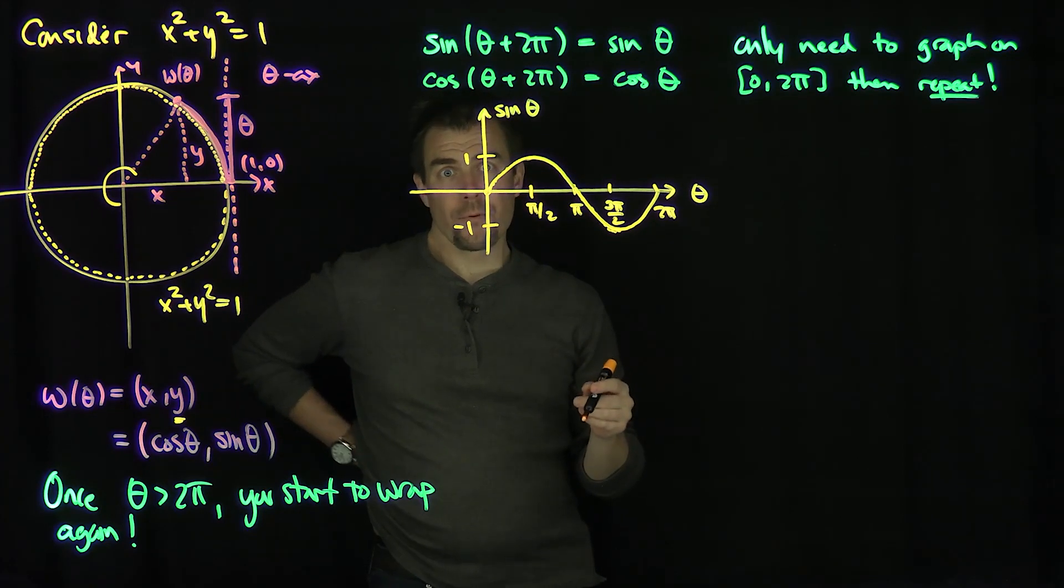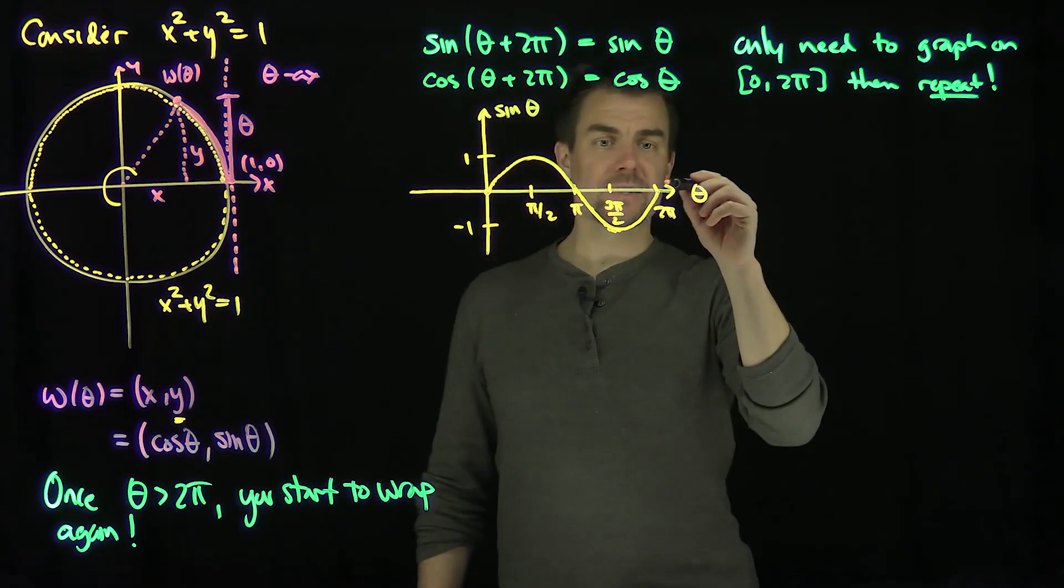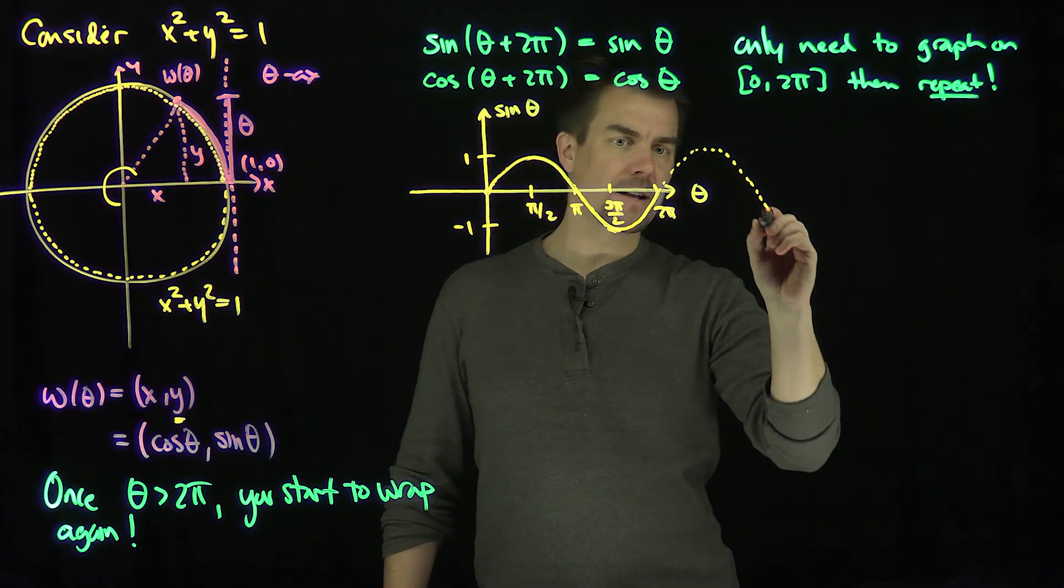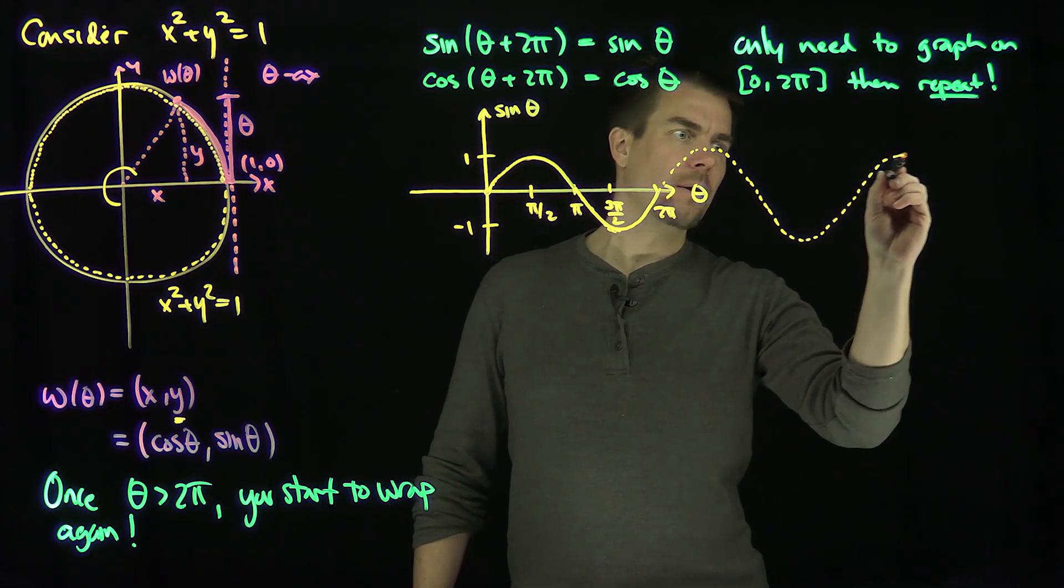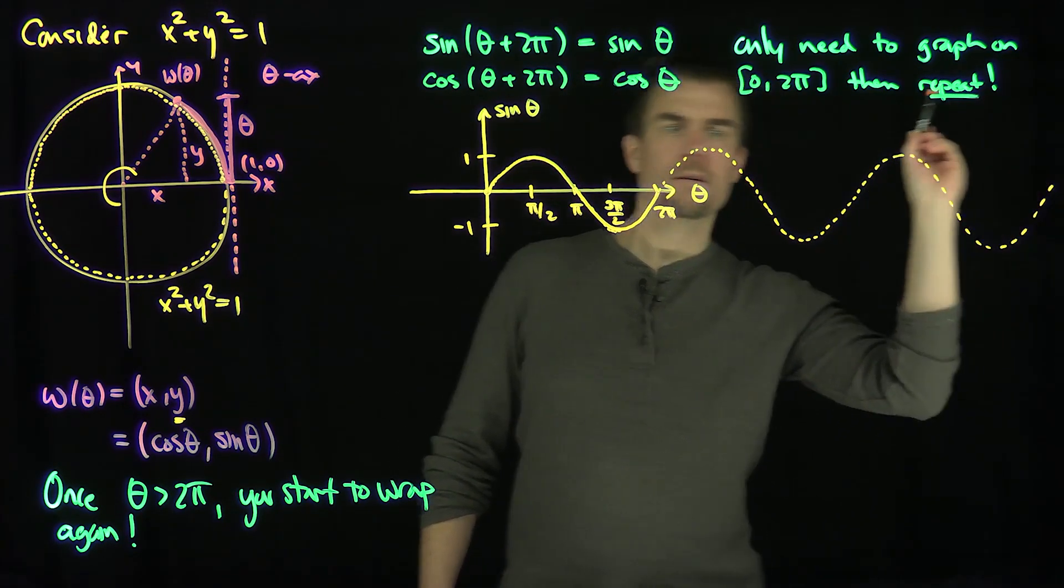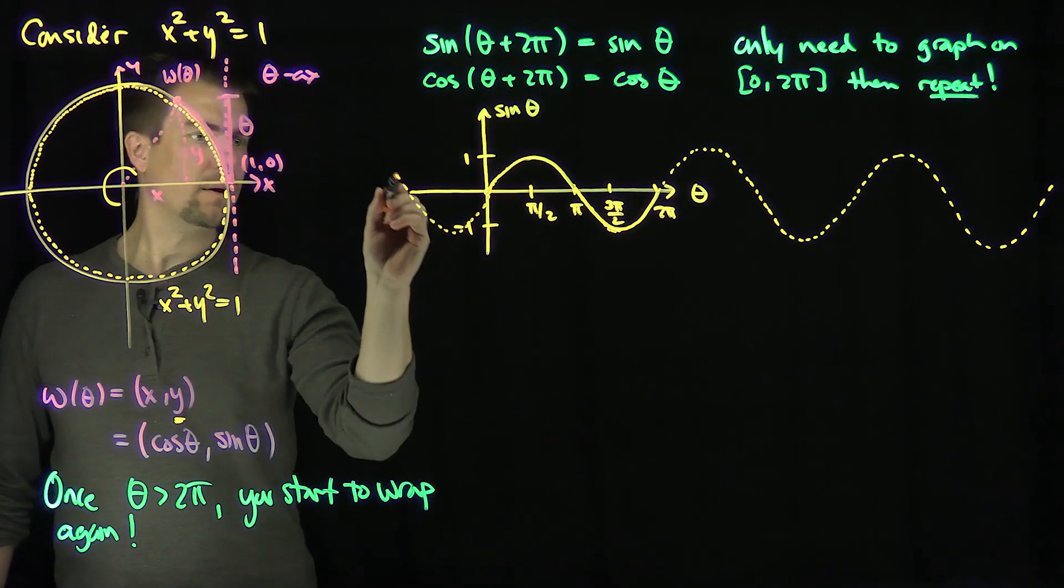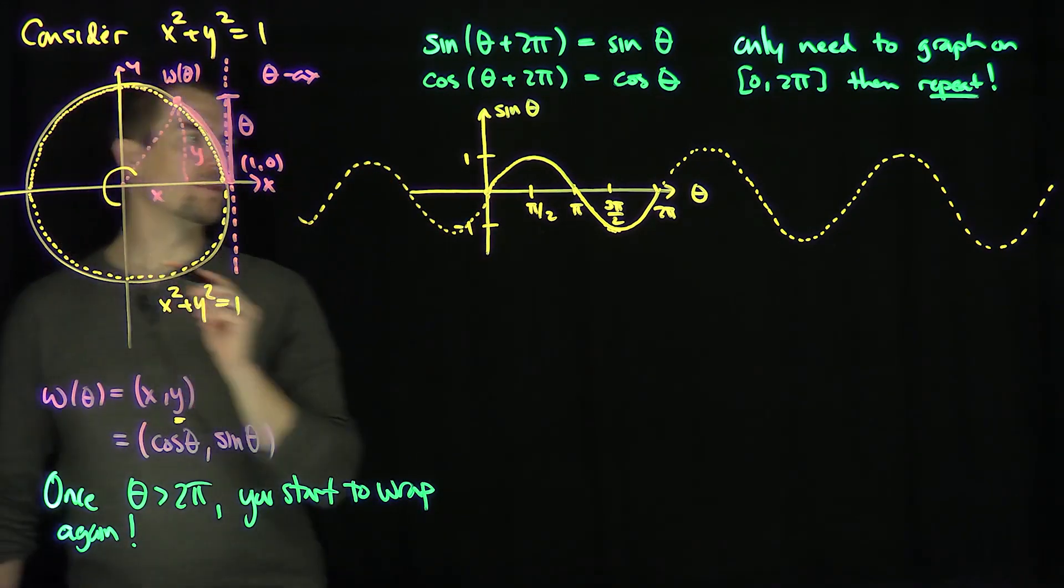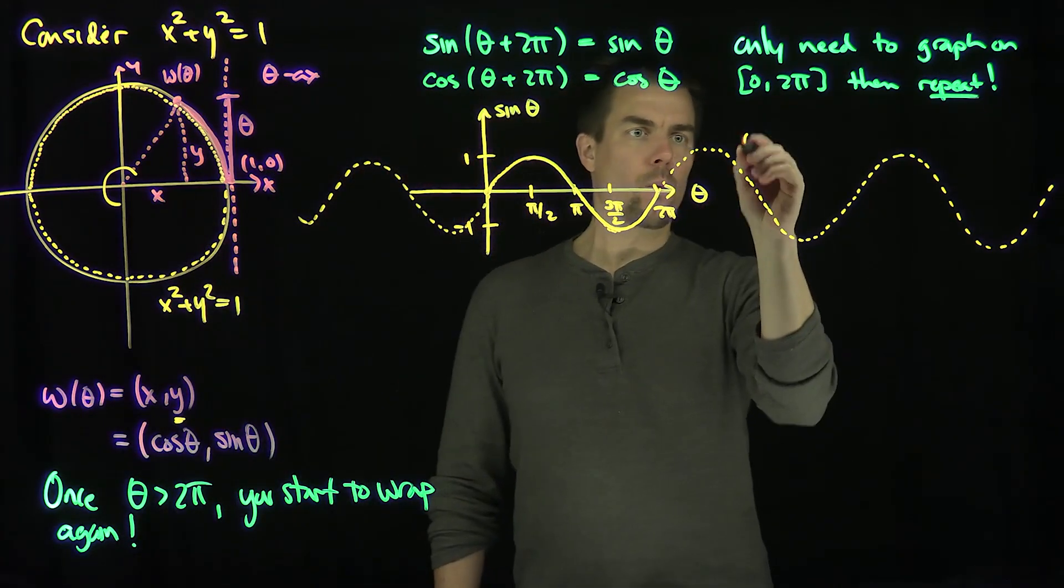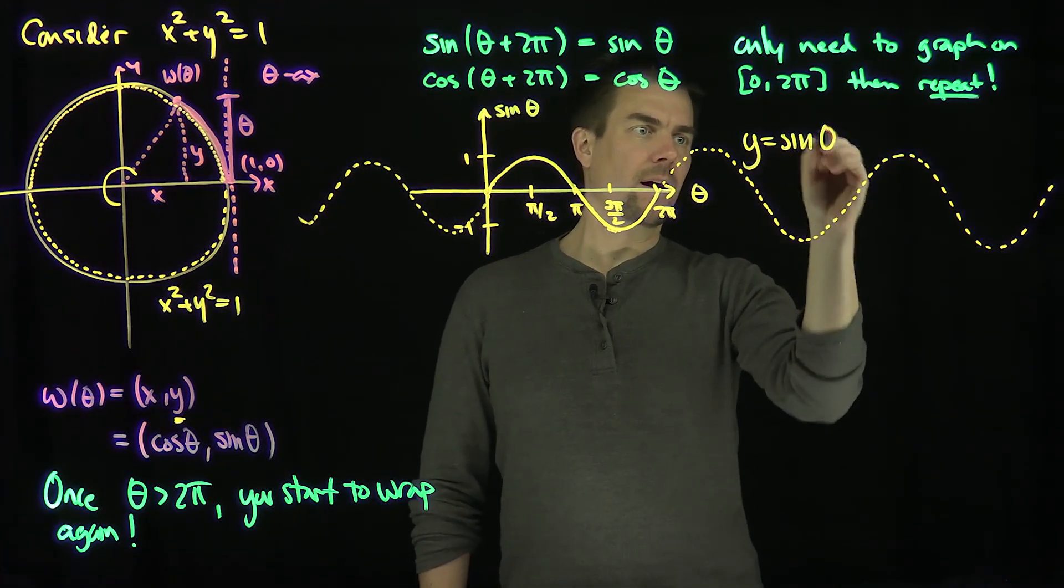And we've drawn one full period of sine. So if I want to keep graphing sine, what would I do? I would just keep the exact same behavior going forever in the forward direction, forever in the backwards direction. So this is a graph of y equals the sine of theta.